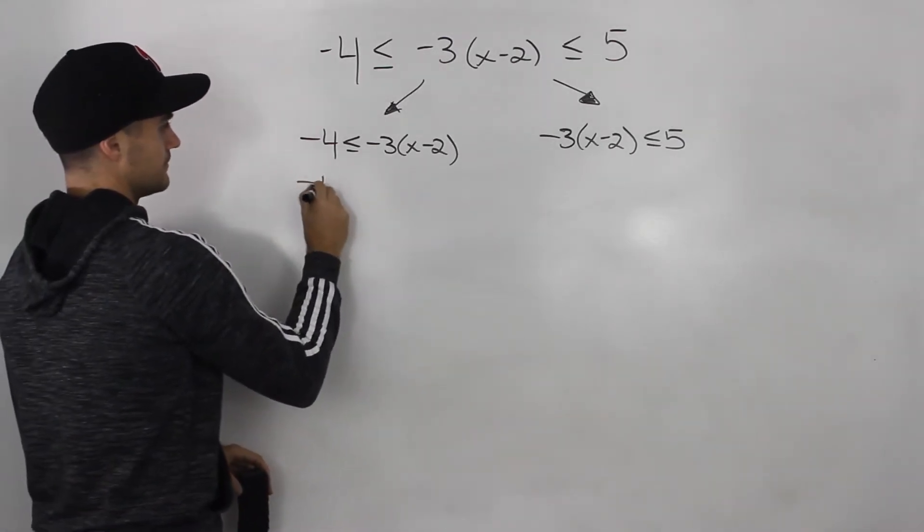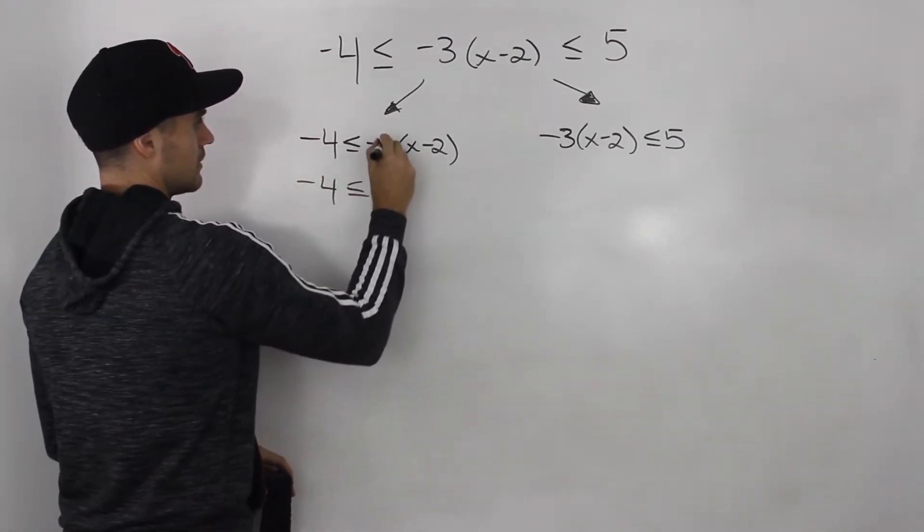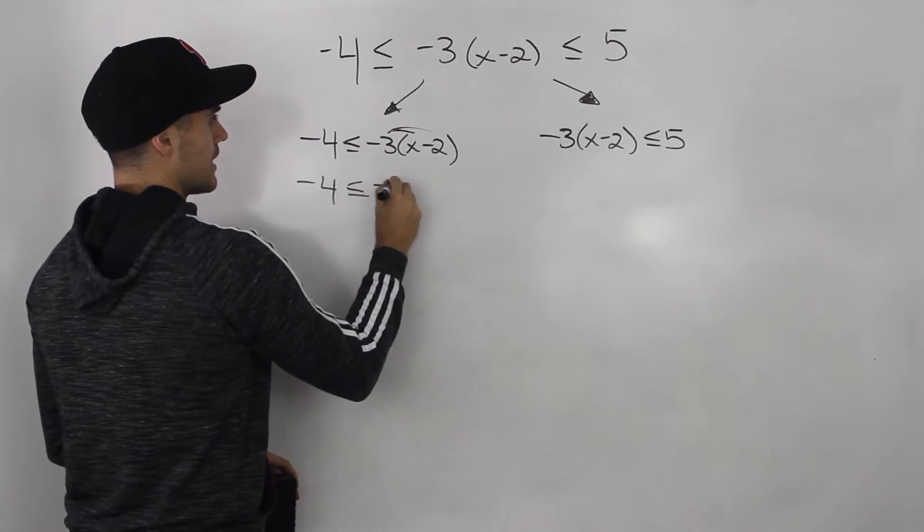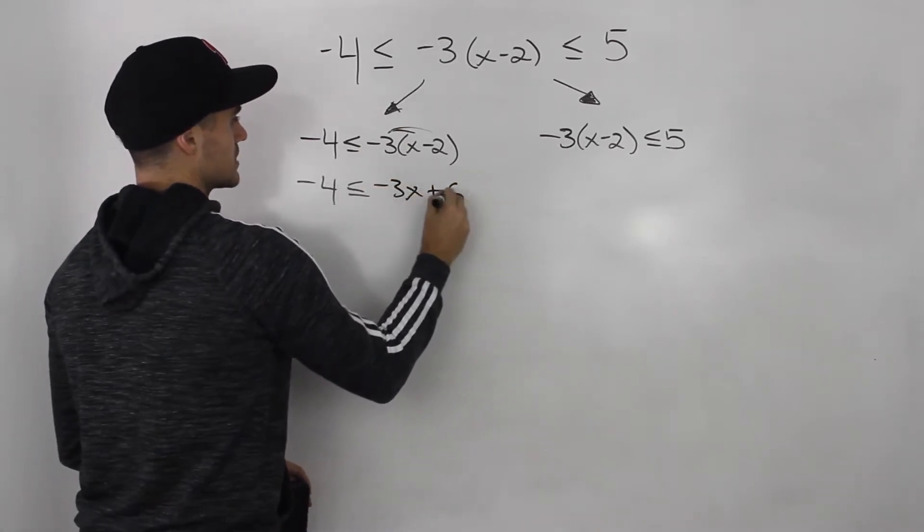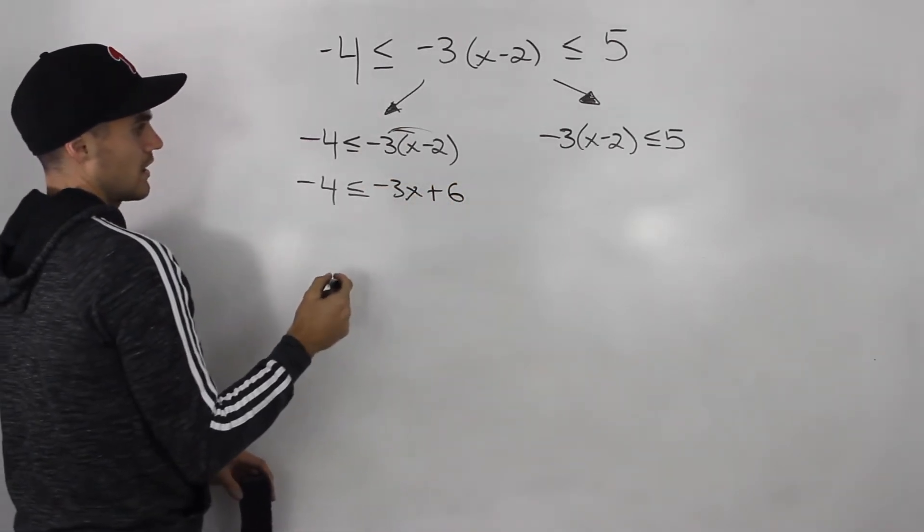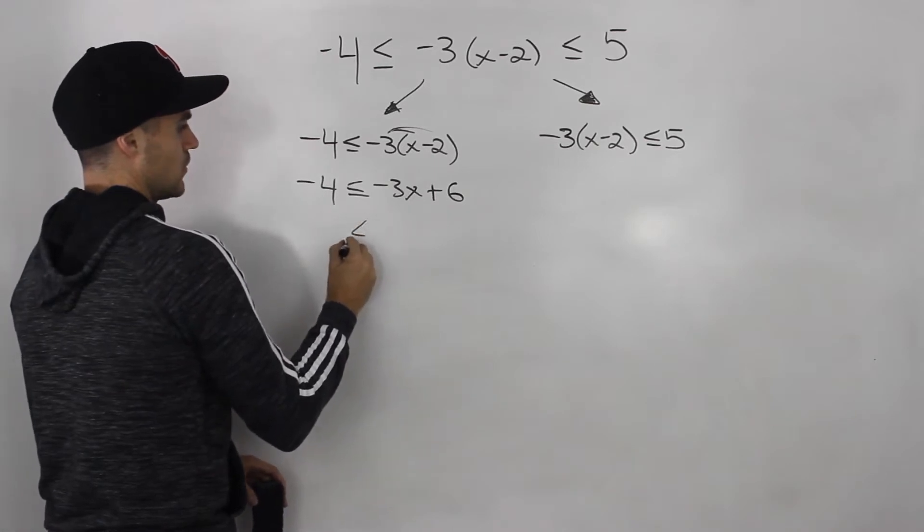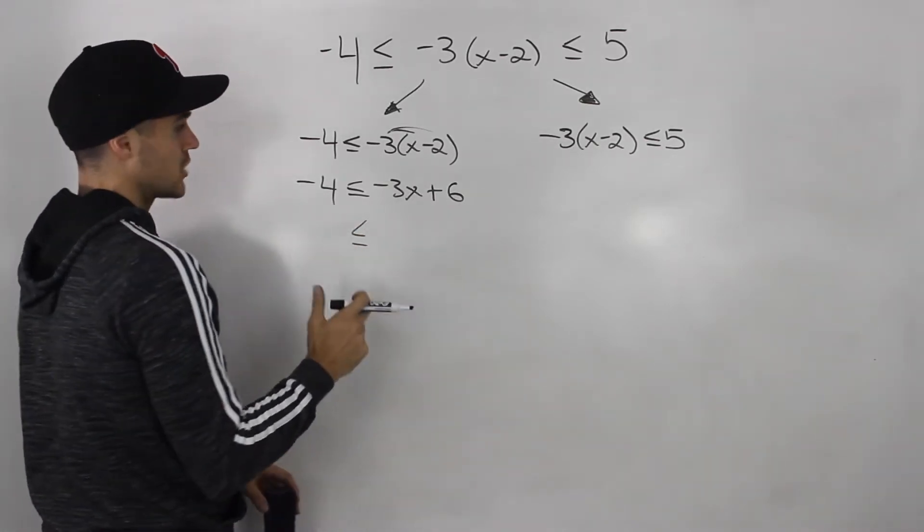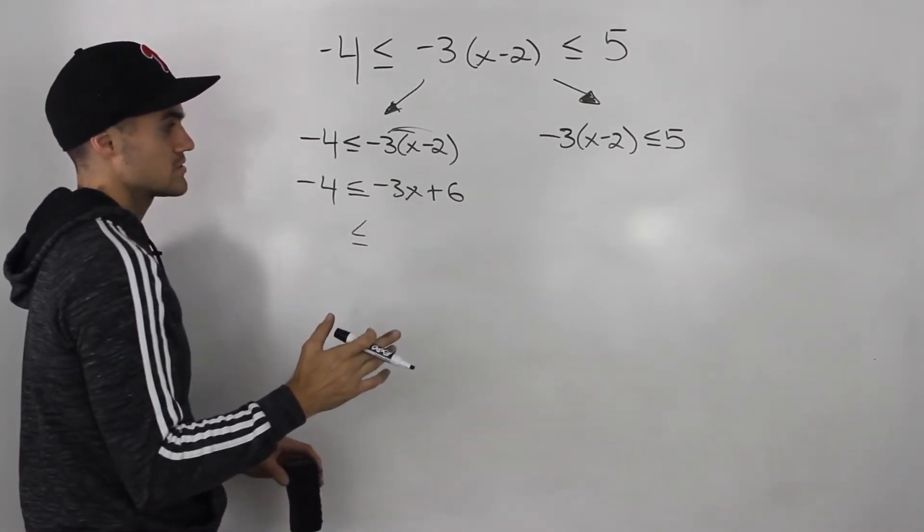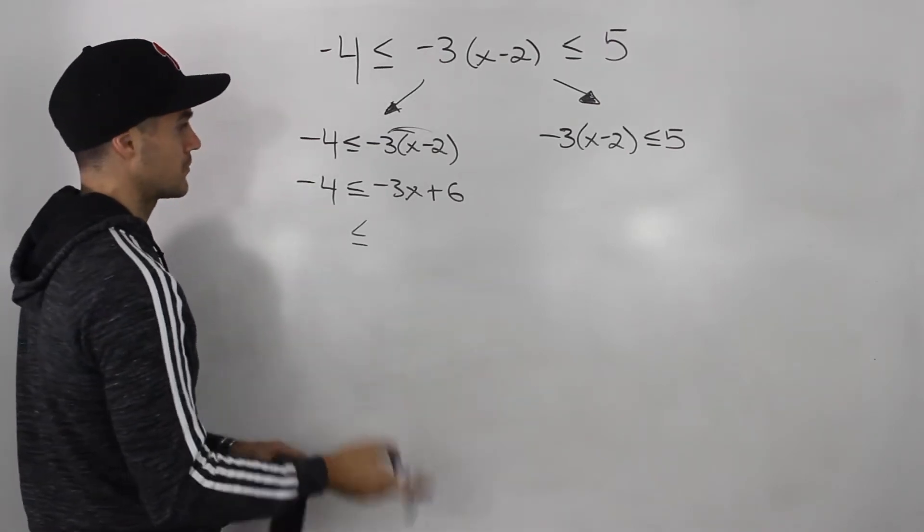So starting off with this one, distribute that negative 3 inside, negative 3x plus 6. As I mentioned, with linear inequalities, you want to try to bring all of the variables to the side where they'll end up being positive.